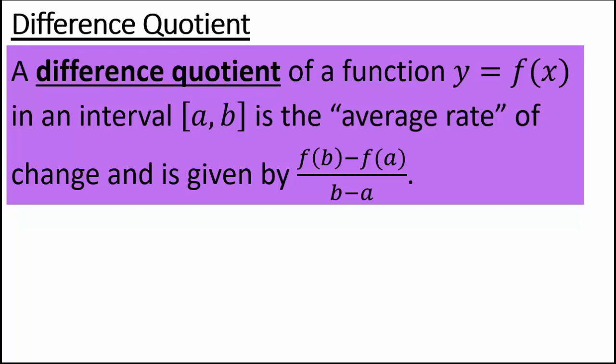This means it's going to be the slope of the line that passes through the point (a, f(a)) and (b, f(b)).